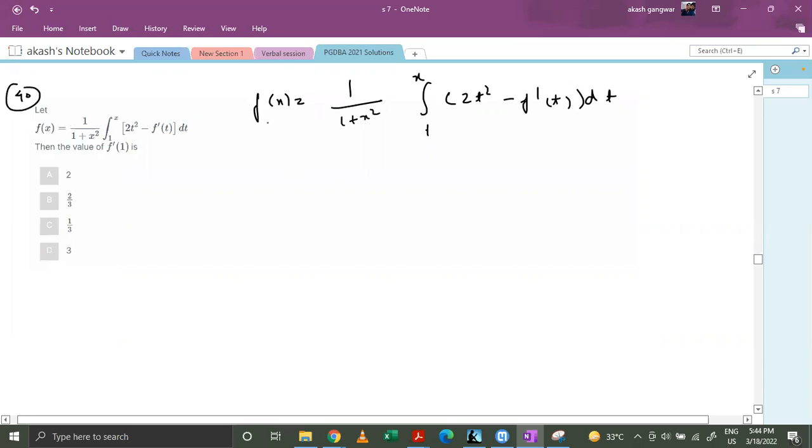If I differentiate this directly, you'll have to apply the product rule, but that won't help because you'll still be left with the unknown integral. Instead, we'll multiply it through, which makes this much easier. Now let's differentiate both sides.